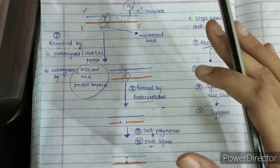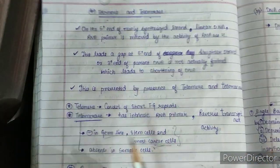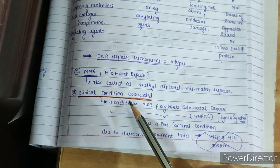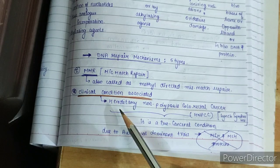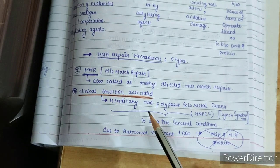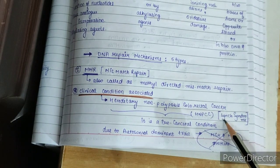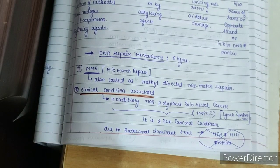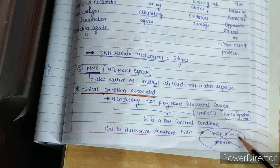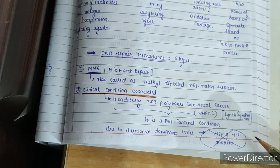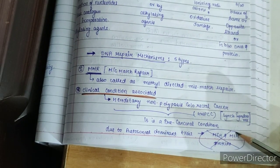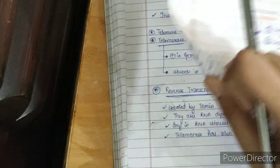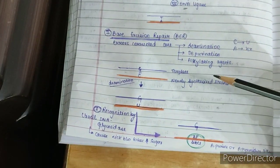If mismatch repair is non-functional, the associated clinical condition is hereditary non-polyposis colorectal cancer, also called Lynch syndrome. It is a pre-cancerous condition caused by an autosomal dominant trait. The mutated proteins are MSH and MLH, which are involved in recognition of the mismatch base in eukaryotes. If these proteins are damaged, the repair mechanism cannot occur, resulting in hereditary non-polyposis colorectal cancer.